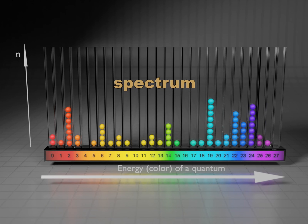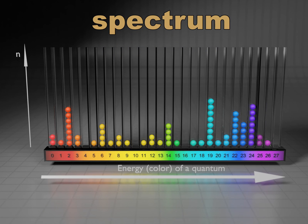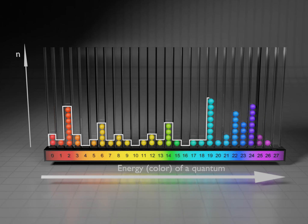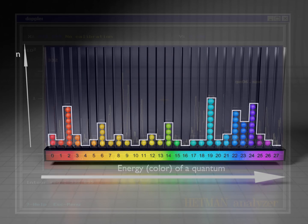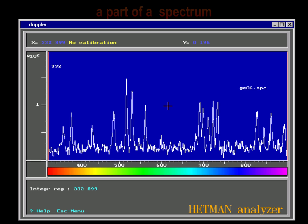This kind of plot is called a spectrum. From it we can read, for example, that during this experiment the most frequently observed quantum had an energy of 19, and very often we observed quanta with energy 14, while there were no quanta with energy 16. If we draw a white outline on this plot, we obtain something that looks like a New York skyline. This is how it looks on the computer screen — we can read here which gamma quanta were registered during the experiment.